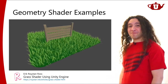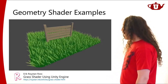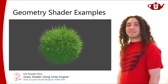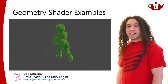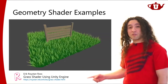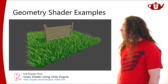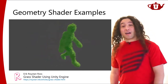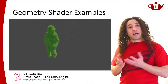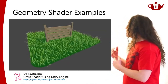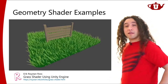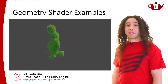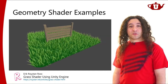Here's an example using geometry shaders to generate animated grass blades. The input is a surface mesh, and from those triangles the geometry shader outputs these grass blades. They're animated as well in the geometry shader. That's a pretty cool example showing the kinds of things you can do with a geometry shader.